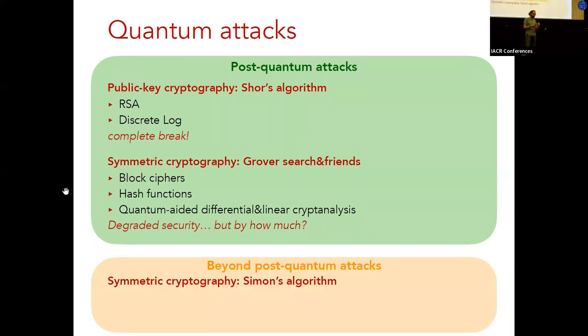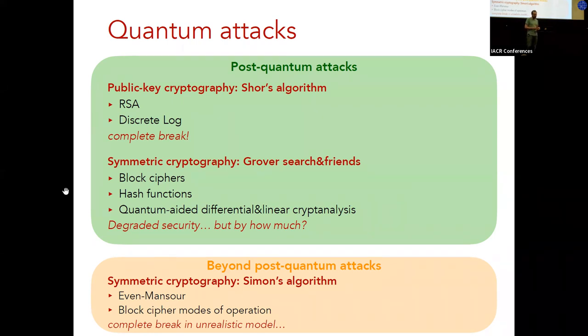Also, against symmetric key cryptography, there's Grover's algorithm-based attacks and similar. These are generic attacks against block ciphers and hash functions, but also quantum-aided differential and linear cryptanalysis. These are not complete breaks, but they degrade the security compared to classical attacks. The question is, of course, by how much? Finally, there's this additional Q2 family of attacks based on Simon's algorithm.